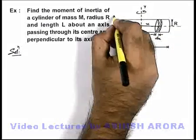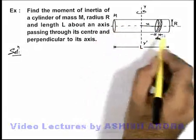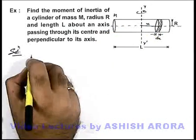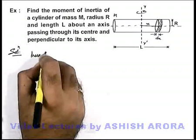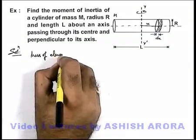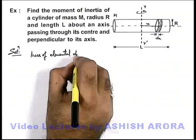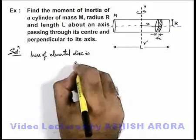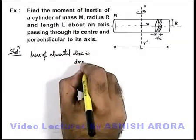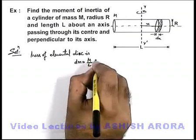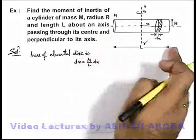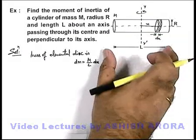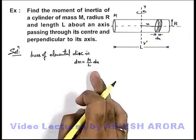As the total mass of the cylinder is m, distributed uniformly across the whole length l, we can simply write the mass of the elemental disc as dm = (m/l)dx, because the whole mass is distributed in the length l, so for the length dx the mass will be (m/l)dx.